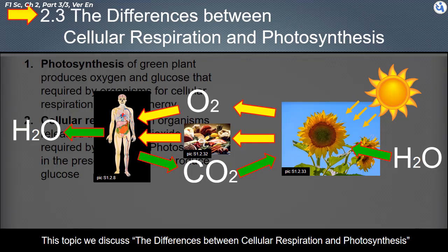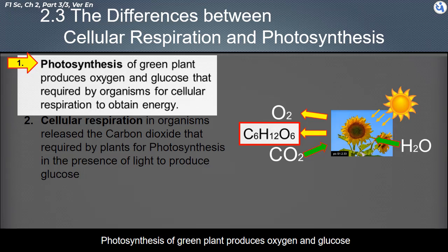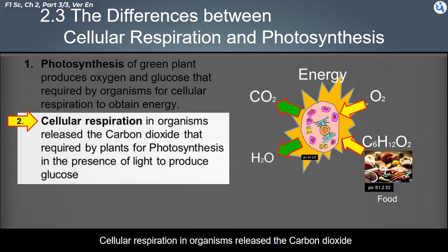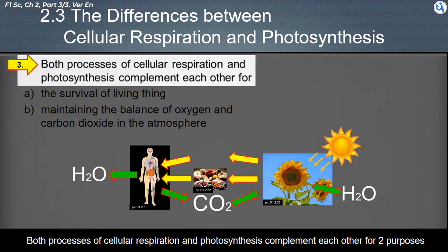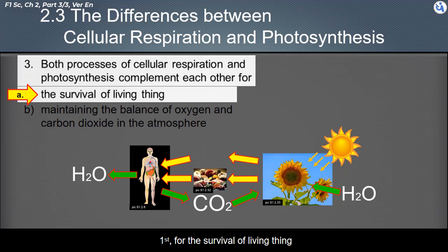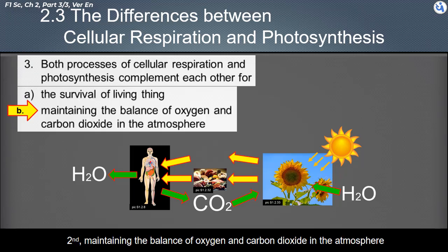Now we discuss the differences between cellular respiration and photosynthesis. Photosynthesis in green plants produces oxygen and glucose required by organisms for cellular respiration to obtain energy. Cellular respiration in organisms releases carbon dioxide required by plants for photosynthesis to produce glucose. Both processes complement each other for two purposes: first, for the survival of living things; and second, maintaining the balance of oxygen and carbon dioxide in the atmosphere.